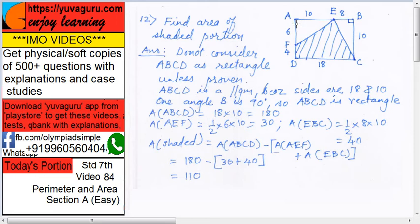Now, first question is, is ABCD a rectangle? No, don't consider it unless it is proven. Now, what can you say about this? Here, what are the sides? 10 plus 8 is 18, 18 over here. So sides are equal.